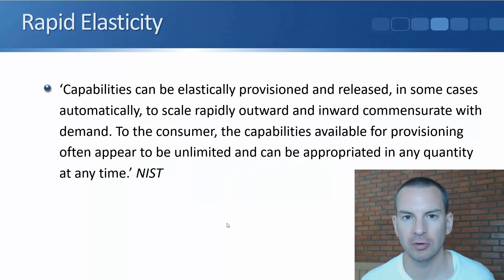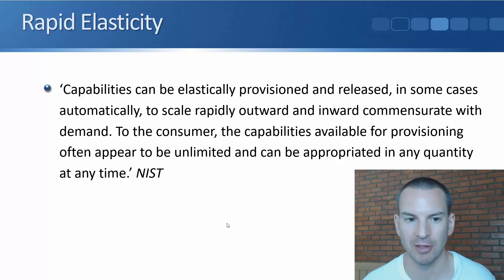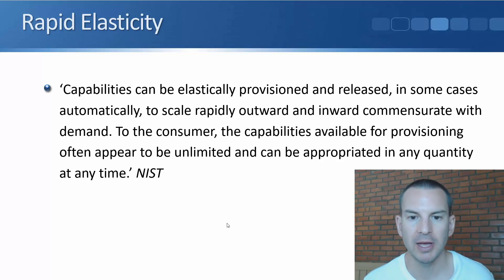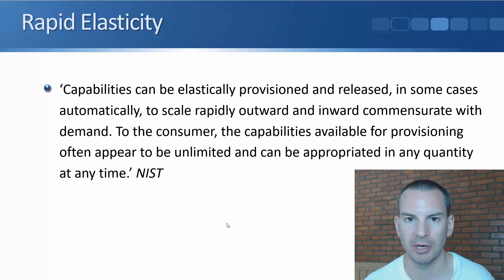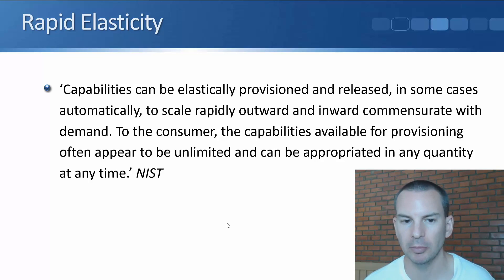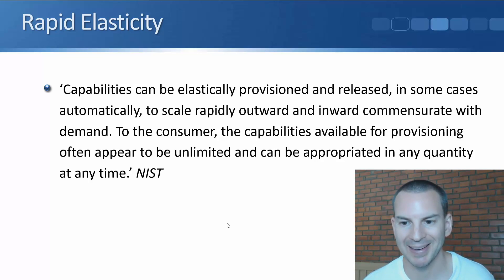The next essential characteristic to cover is rapid elasticity. The definition from the NIST is: capabilities can be elastically provisioned and released, in some cases automatically, to scale rapidly outward and inward commensurate with demand. To the consumer, the capabilities available for provisioning often appear to be unlimited and can be appropriated in any quantity at any time.